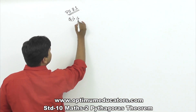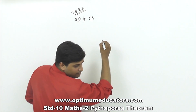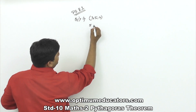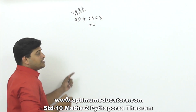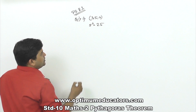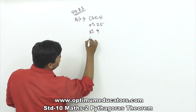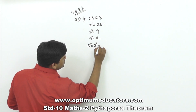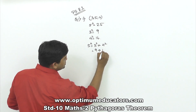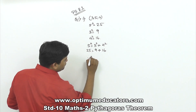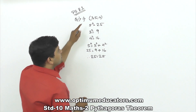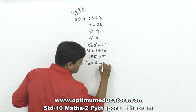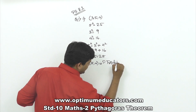Let us take the first example question: the set {3, 5, 4}. The largest number is 5, and 5 squared is 25. The other two numbers are 3 and 4; 3 squared is 9 and 4 squared is 16. Since 5² = 3² + 4², that is 25 = 9 + 16 = 25. Hence, the set {3, 4, 5} is a Pythagorean triplet.